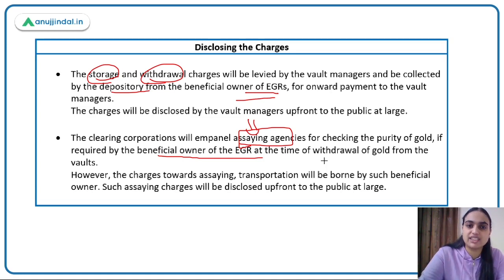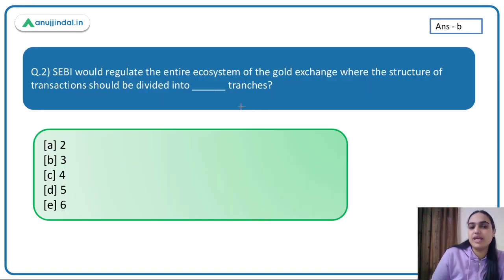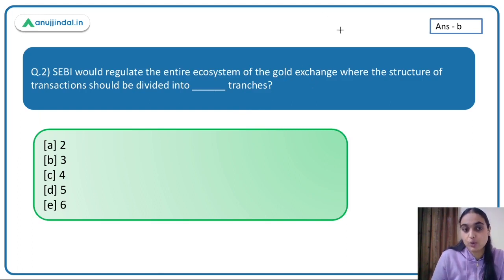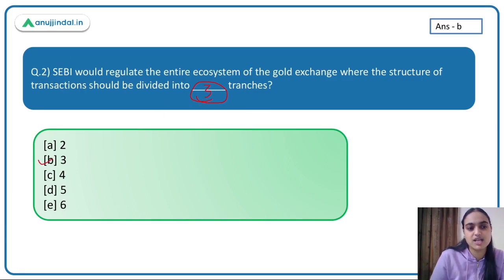The next question: SEBI would regulate the entire ecosystem of the gold exchange, where the structure of transactions is divided into how many tranches? We discussed three tranches, so the answer is option B: three.